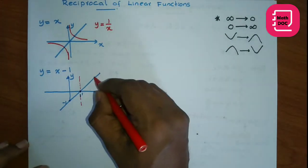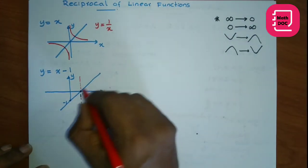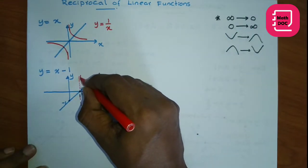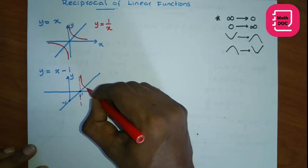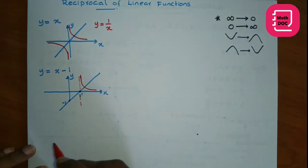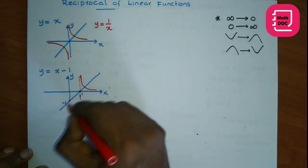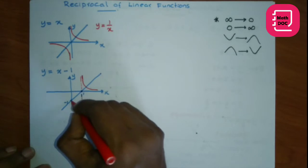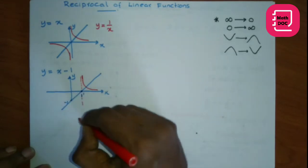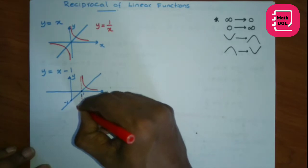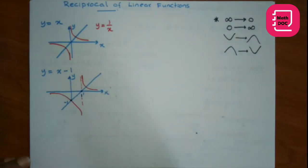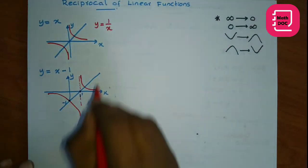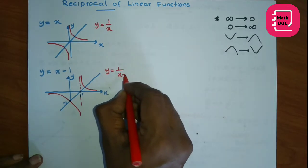For this portion, all are positive, so 0 goes to infinity, then start from here, and infinity goes to 0 — sketch this the same way. For this portion it is negative, so 0 goes to negative infinity. And here 1's reciprocal is minus 1, therefore the graph passes through minus 1 and moves like this. That is y equals 1 over x minus 1.